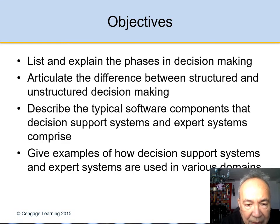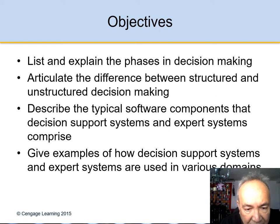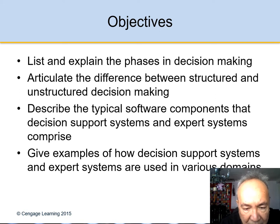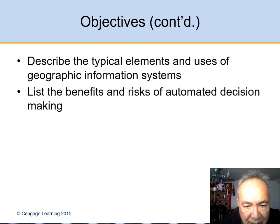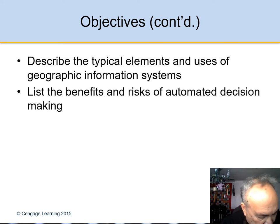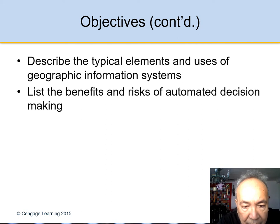In this chapter, we will be talking about the phases in decision making, the difference between structured and unstructured decision making, the typical software components of decision support systems and expert systems, examples of how these systems are used across various domains, geographic information systems, and automated decision making.